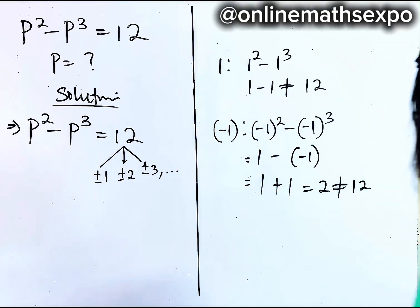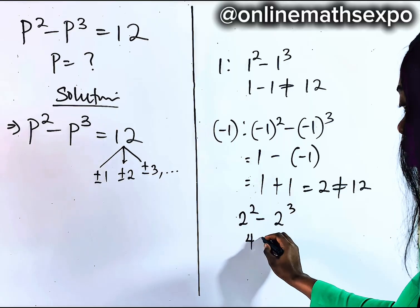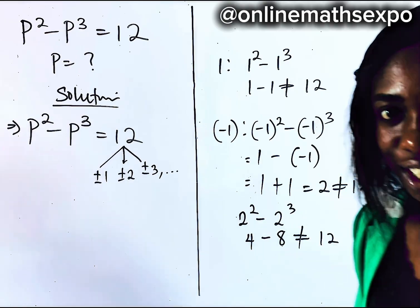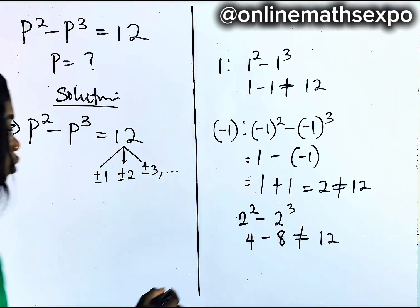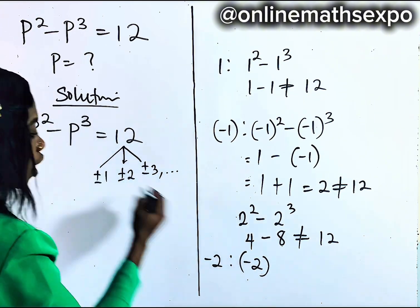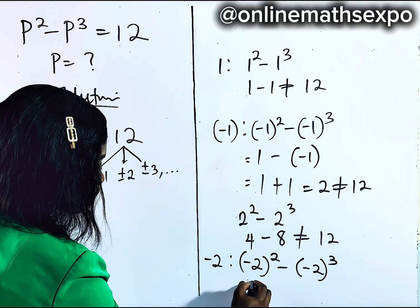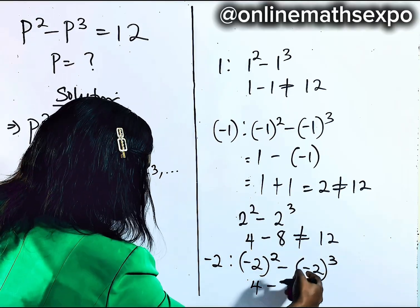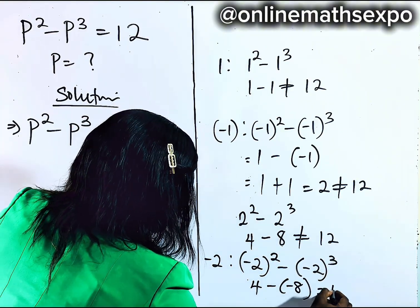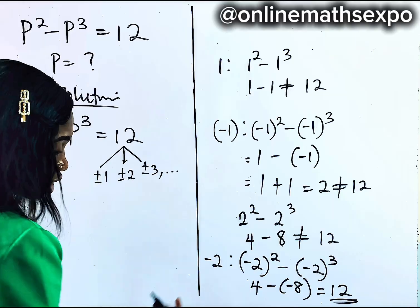Now let's check for when P is two. We have two squared minus two cubed. This gives us four minus eight, which is not equal to 12. Now let's see when P is negative two. We have negative two raised to the power of two minus negative two raised to the power of three. When you square negative two you get four, and when you cube negative two you get negative eight, so four minus negative eight gives positive 12. So P equals negative two.